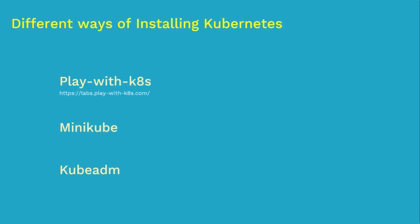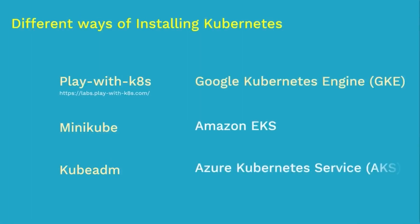Besides these three, there are three other popular cloud-based platforms which offer Kubernetes services: Google Kubernetes Engine, Amazon Elastic Container Services for Kubernetes, and Azure Kubernetes Service. What's common and great about these cloud-based Kubernetes services is that all you need to define is how many nodes your cluster should have and the size of CPU and RAM each node should contain. Once you fill in these details and submit, these cloud services will automatically set up the Kubernetes configuration and take care of a whole lot of things. We have a dedicated video on Google Kubernetes Engine to discuss this in detail.